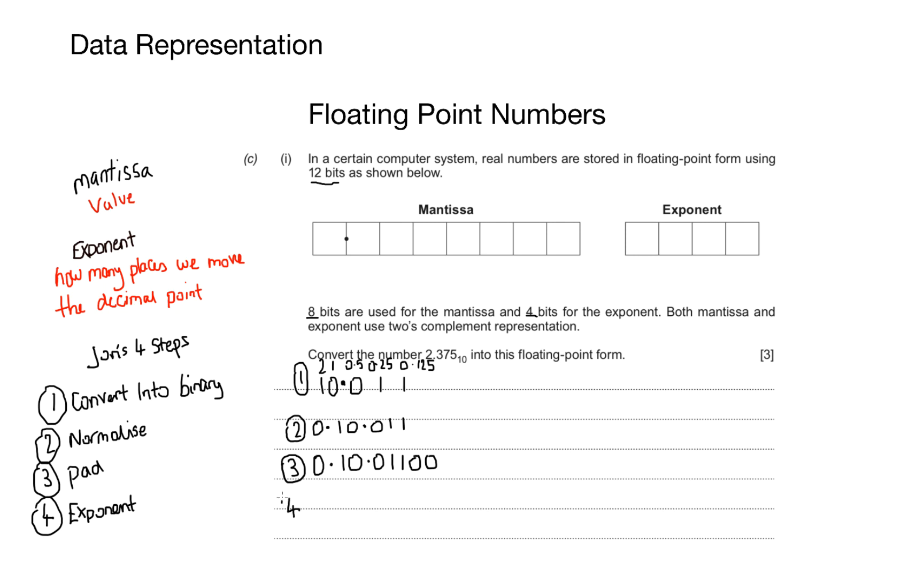For step four, to work out my exponent, all I need to do is work out how many decimal places my first decimal point needs to move in order to get to my normalized point. And here I move one, two places, and my question says you have four bits for the exponent, and all I need to do is represent the number two using four bits. So that'll be 0010. And then I just put the mantissa and the exponent in the boxes provided. And that's my final answer. It comes out as 01001100 with an exponent of 0010.